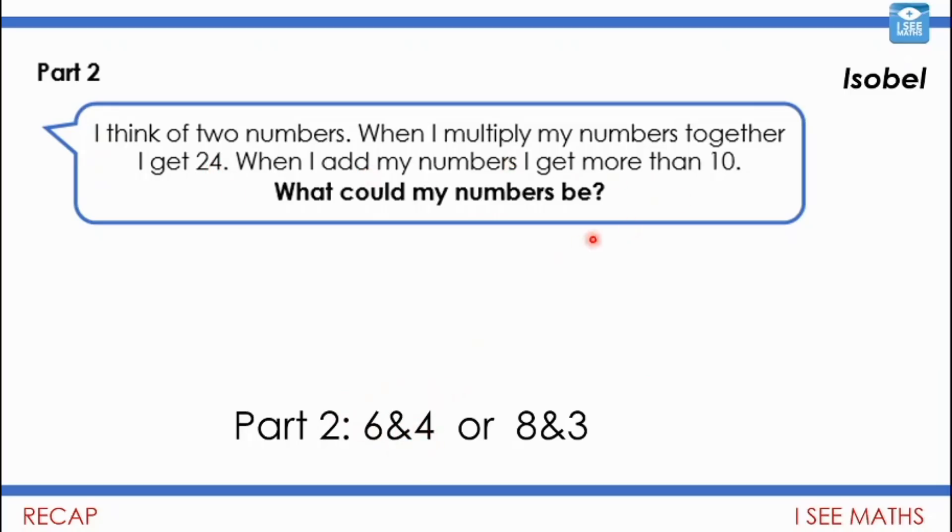Well Isabel had spotted that actually when you multiply six and four you do get 24 but when you add those numbers that is 10, it's not more than 10. So actually I had to go back and had to change that question. I'm not going to stop making mistakes and the more children like Isabel that can find them and tell me the better. So thank you so much. Well done.